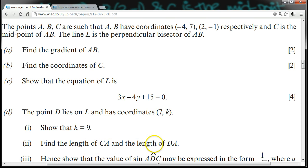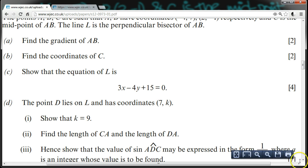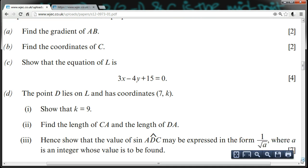The point D lies on L and has coordinates (7, k). Show that k is 9. Find the lengths CA and DA. Hence, show that the value of sine ADC may be expressed in the form 1 over square root A, where A is an integer whose value is to be found.